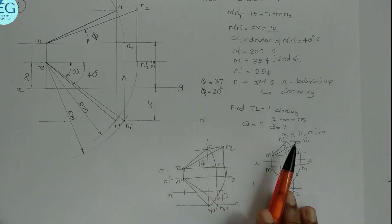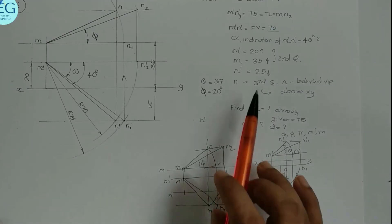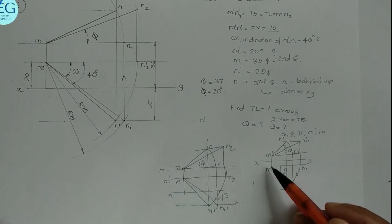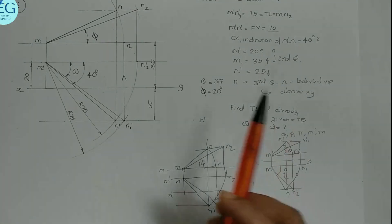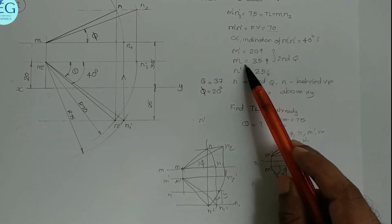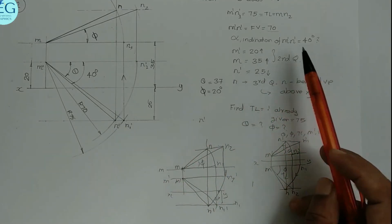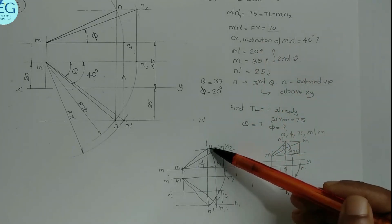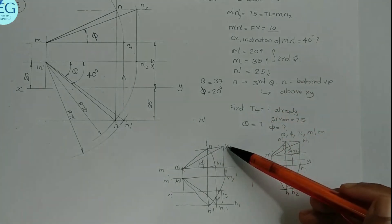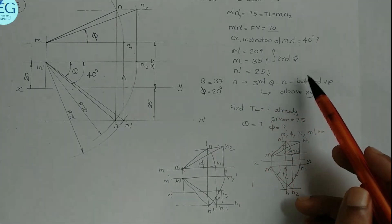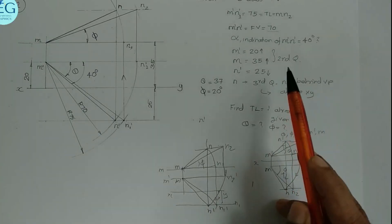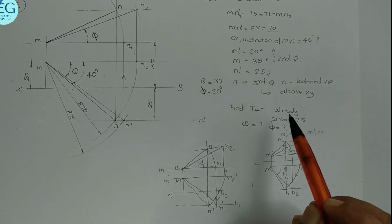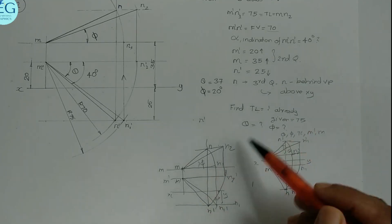We will now summarize the marking scheme. Locating M', M, N' — 3 to 4 marks. Front view construction — 8 marks. Rotating and finding the final end — 20 marks total. Neatness and dimensioning — usually 2 marks. Finding inclinations theta and phi — 5 marks. Neatness and dimensioning — 2 marks. The answer key will be shown in the next video.